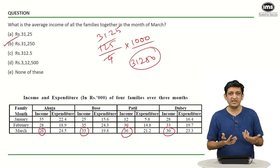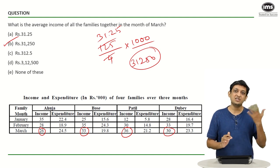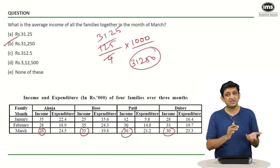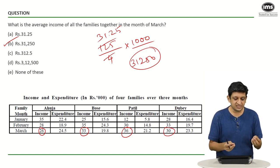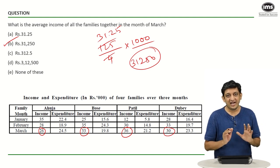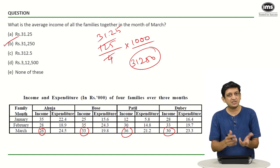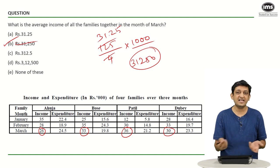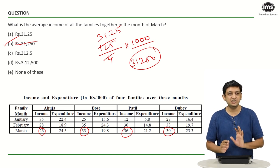Another way to think about it: Ahuja earned 26,000, Bose 33,000, Patil 36,000, and Dubey 30,000 — everyone earned somewhere around 30,000. So on average the answer has to be close to 30,000. Among the options, 31,250 is closest to 30,000, so that is your answer. You can use context and estimation instead of calculating the entire thing, and you will still be fine in most situations.